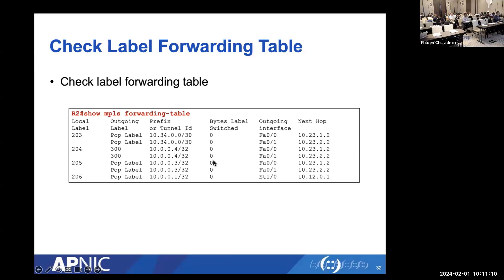In this forwarding output we can still see non-loopback destinations — the /30 point-to-point links — because we haven't applied any filtering yet. By default, LDP assigns labels for all IGP routes including point-to-point links. Since we want to allocate labels only for loopbacks, we need to add a filter. This is optional but useful for keeping the label information base smaller.